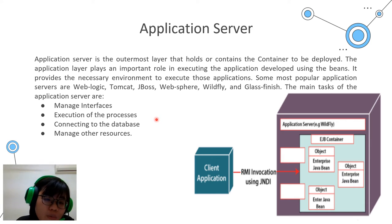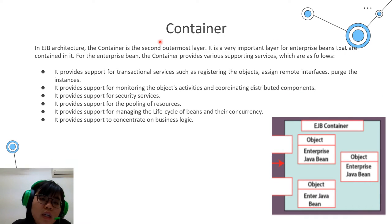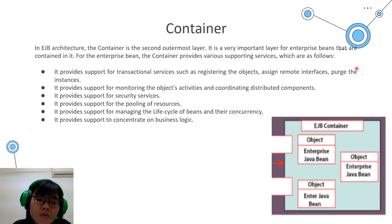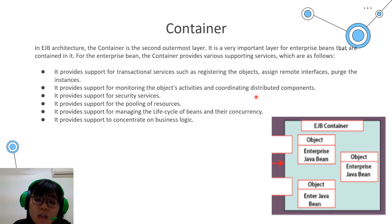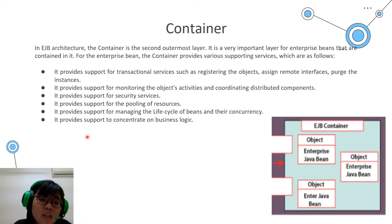The EJB container is the second outermost layer and provides various supporting services, making it quite important for the EJB model. It provides support for transaction services such as registering objects, assigning remote interfaces, and pushing transactions. It also supports monitoring object activities, coordinating distributed components, security services, pooling resources, managing the lifecycle of beans, concurrency, and allowing developers to concentrate on business logic.